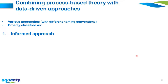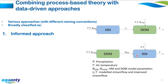Hydrologists have proposed various combined approaches with different naming conventions. This classification is not exhaustive but serves as a starting point. First, the 'informed' approach: data-driven models are informed with relevant theoretical knowledge. For example, precipitation P and air temperature T are given as inputs to the hydrological model; its outputs and parameters are then fed into the data-driven model to produce a refined streamflow output. Alternatively, information is extracted from the data-driven model — such as model parameters — to be used within the process-based equations.